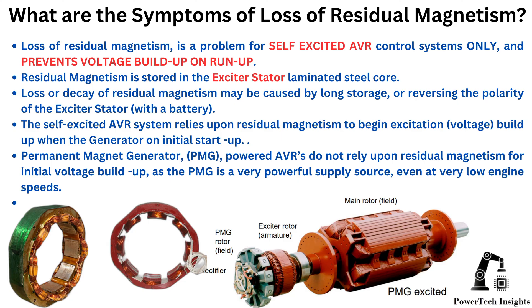Residual magnetism is stored in the exciter stator laminated steel core. Loss or decay of residual magnetism may be caused by long storage or a reversing polarity of the exciter stator. The self-excited AVR system relies upon residual magnetism to begin excitation as voltages build up when the generator starts up initially.